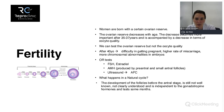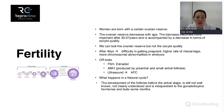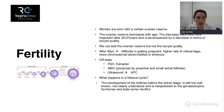We also have AMH, which is produced by pre-antral and small antral follicles. It can be tested at any point in the cycle and gives us an idea of the total ovarian reserve. Then there is the ultrasound, which performs the antral follicle count. At the beginning of the cycle, different follicles are visible because they contain a little fluid; counting them gives us an idea of ovarian reserve.